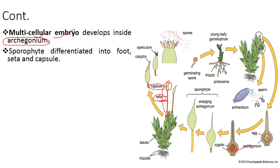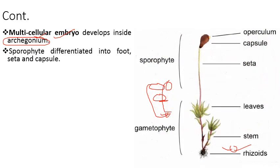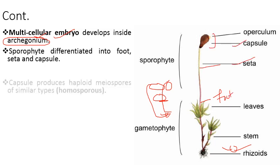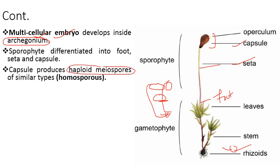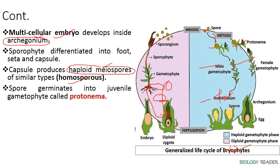The foot is attached to the gametophyte; the seta is the stalk-like structure; and the capsule bears the spores. The capsule produces haploid meiospores — spores formed by meiosis — and these are mostly homospores, meaning spores of similar size. The spores germinate into a juvenile gametophyte called protonema, which forms thread-like structures. This is again a unique feature of bryophytes.